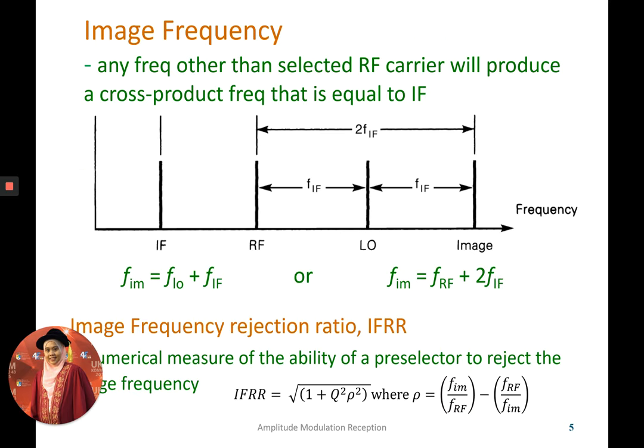Next is about image frequency. This image frequency actually is not IF. Even though it starts with IF, it's not IF signal. IF is actually intermediate frequency. Image frequency we can consider it as the unwanted frequency from this system. But it happened that the image frequency produced from the cross product with the IF and also the RF.